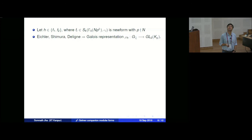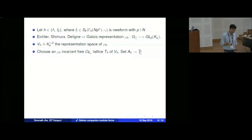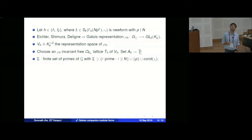By results of Eichler, Shimura, Deligne, and many others, there is a Galois representation attached to such H. The space V_H is the representation space of ρ_H, a two-dimensional vector space. By compactness we can fix an integral lattice T_H inside this, and then the discrete module A_H is defined as V_H/T_H — analogous to two copies of Q_p/Z_p. We fix a finite set Σ of primes of Q containing the bad primes, the prime p, and those primes dividing the conductor of χ.